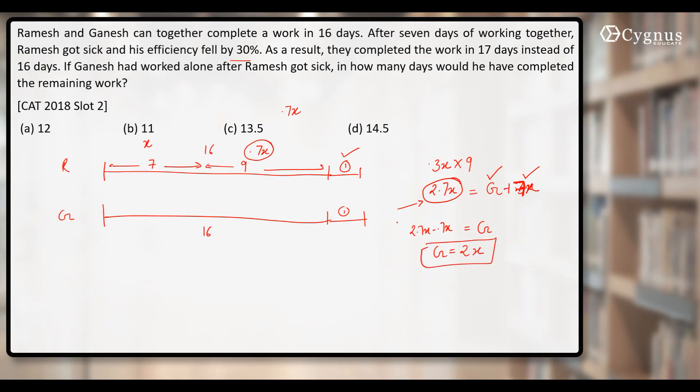And we assume that Ramesh one day's work is X. It shows that Ganesh is twice as efficient as Ramesh. This is clear to everyone, I believe. Now, what's the next line of the question? As a result, they completed the work in 17 days instead of 16 days. If Ganesh had worked alone after Ramesh got sick, in how many days would he have completed the remaining work? Now, Ramesh got sick after 7 days. That means 9 days' work will be finished by Ganesh alone.